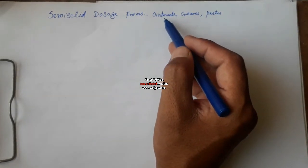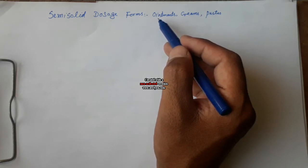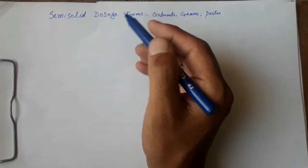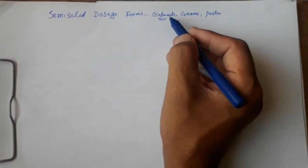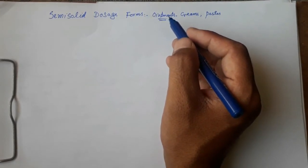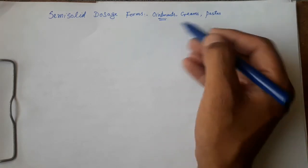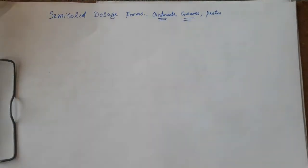Ointments are preparations which are emulsifiable, miscible or immiscible with the skin secretions, and are intended to be applied to the skin or certain mucous membranes for their emollient, protective, therapeutic, or prophylactic purposes where a degree of occlusion is desired. Occlusion means to protect or cover.